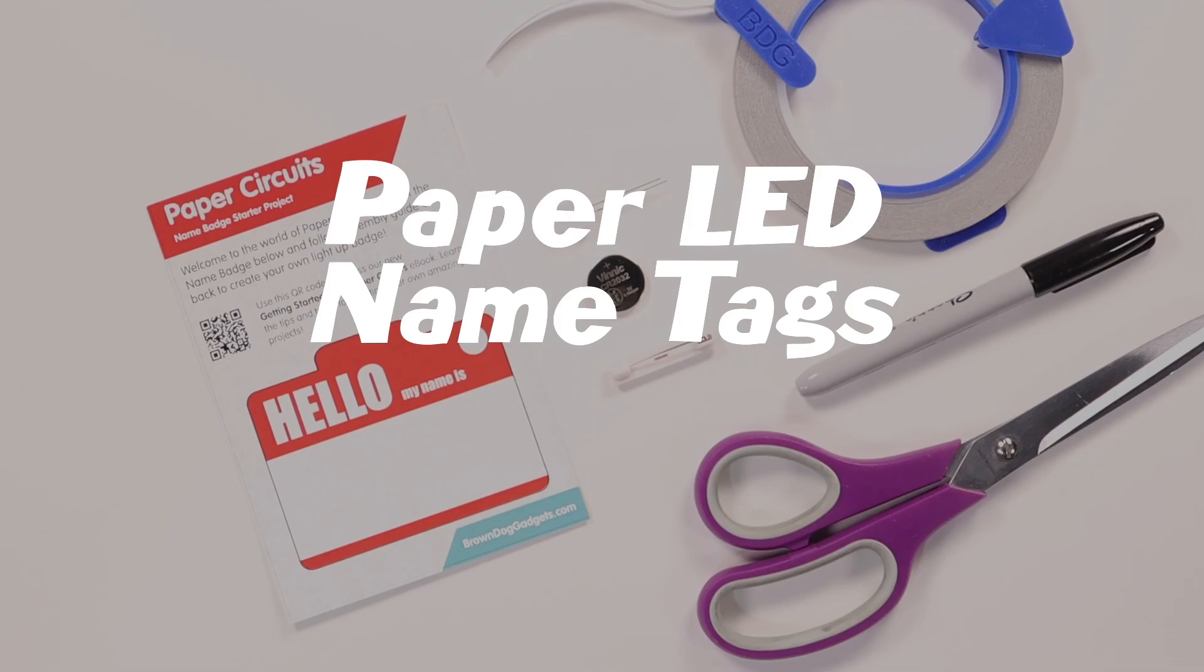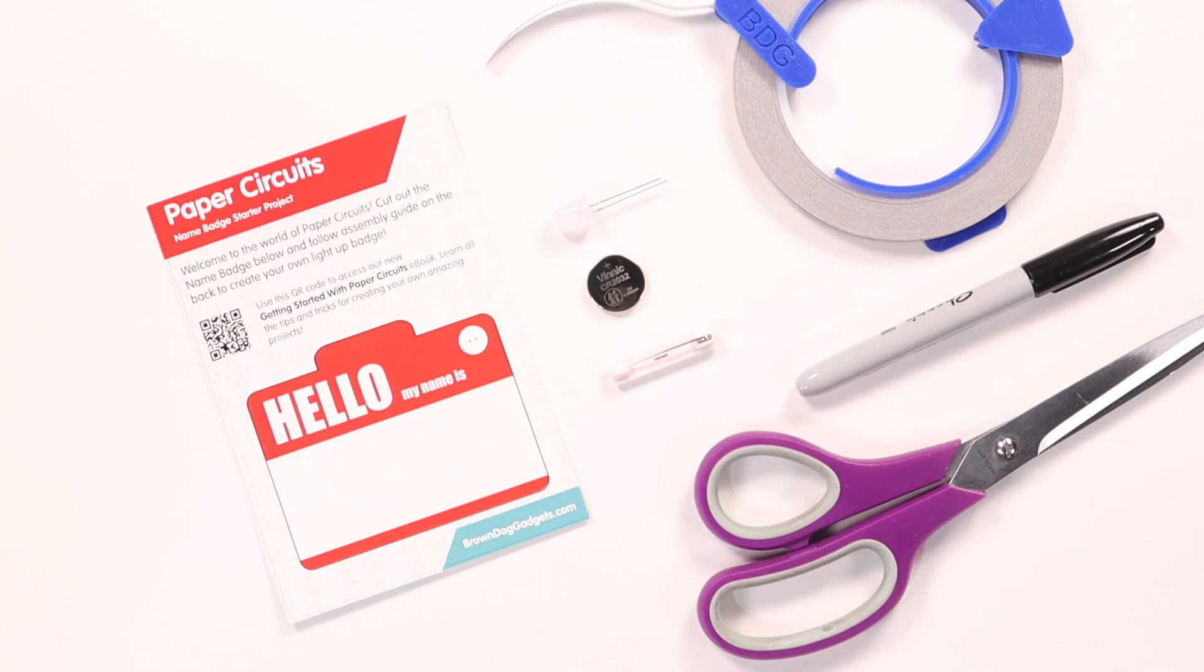Today we're going to show you how to make a paper LED name badge. You'll need a paper printout of the badge, an LED, a battery, and a self-sticking pin. You'll also need maker tape, a marker or crayons, as well as some scissors.